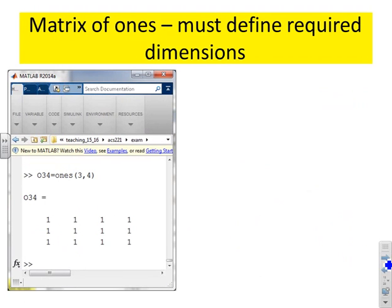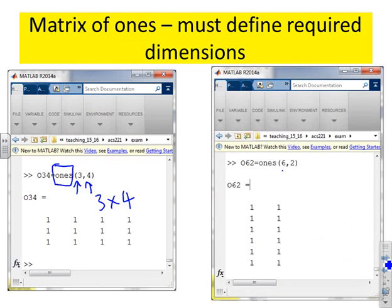What about ones? You've got the same sort of concept, except here you've got to define the row dimension and the column dimension. And the command you want is ones. It's sort of obvious. If you write ones, it gives you a matrix of ones. And here you've got a 3 by 4 matrix of ones. Different example. You'll see I've put 6 by 2, and what do you see? You get a 6 by 2 matrix of ones.